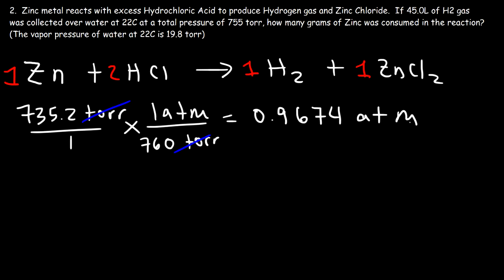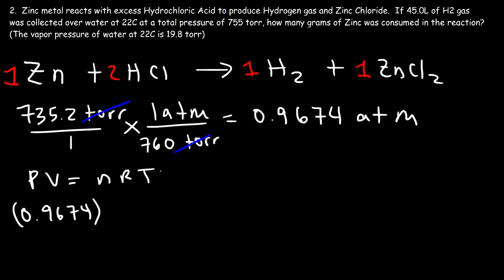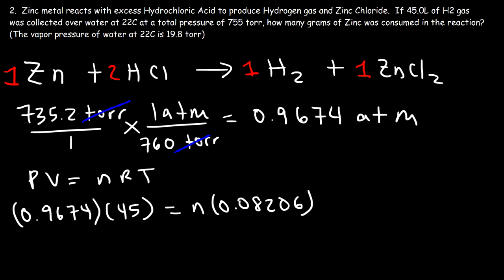Now we can use this to calculate the moles of H2 using PV = nRT. P is 0.9674, V is 45 liters, R is 0.08206, and the temperature is 22 + 273 = 295 Kelvin. So n = (0.9674 × 45) / (0.08206 × 295).